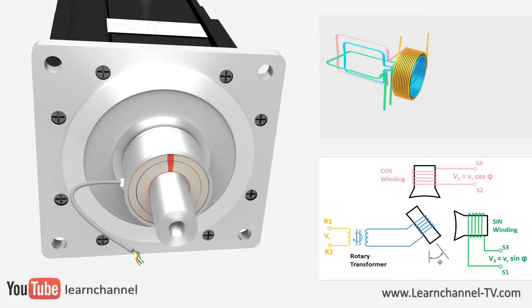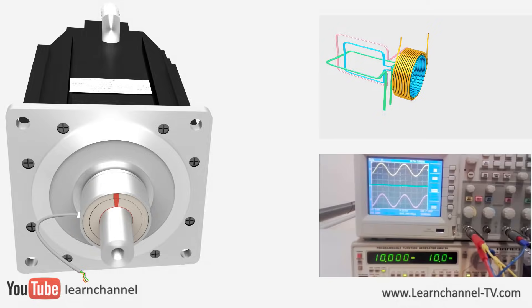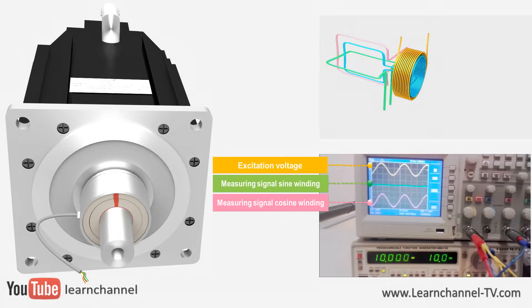So, let's mount this resolver to the motor shaft and apply a high-frequency sine signal to the stator primary winding. The pulsating alternating magnetic field of the rotor winding now induces an alternating voltage in the measuring windings sine and cosine.